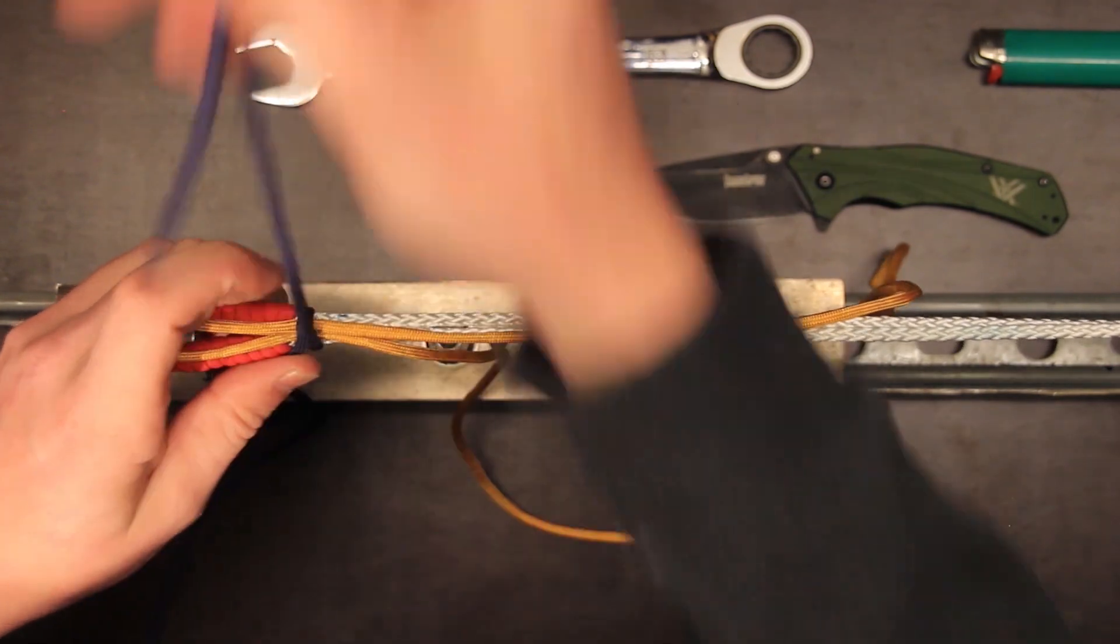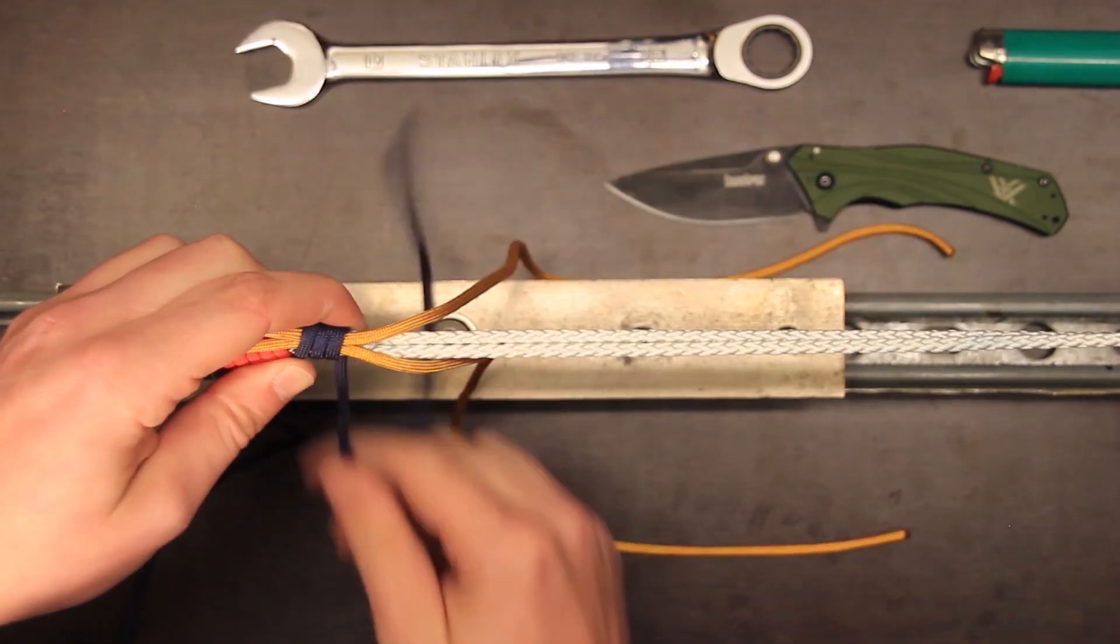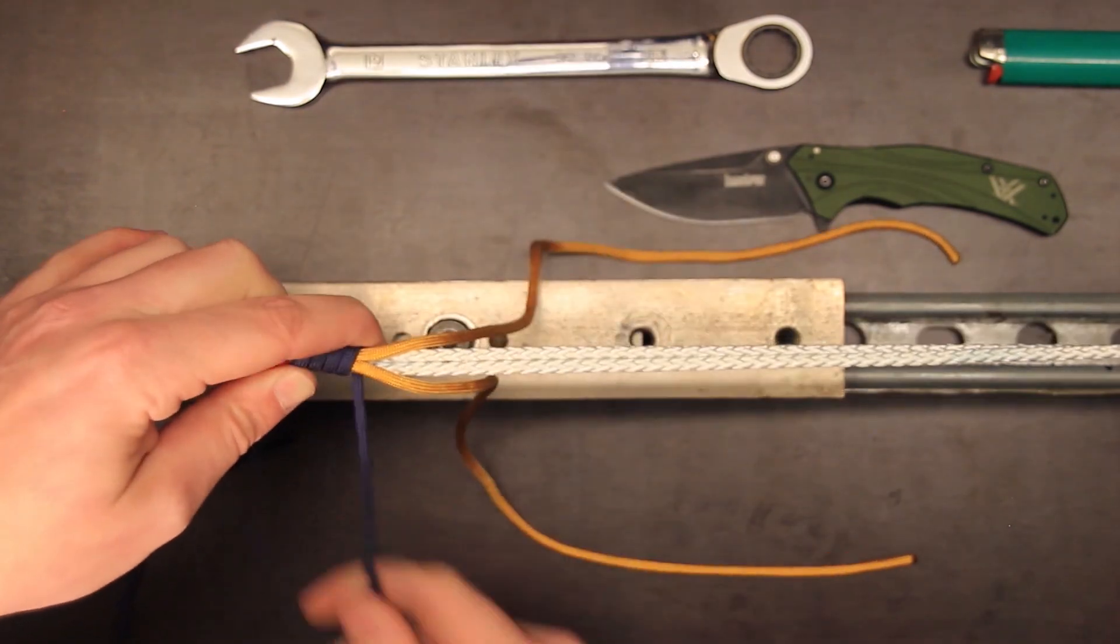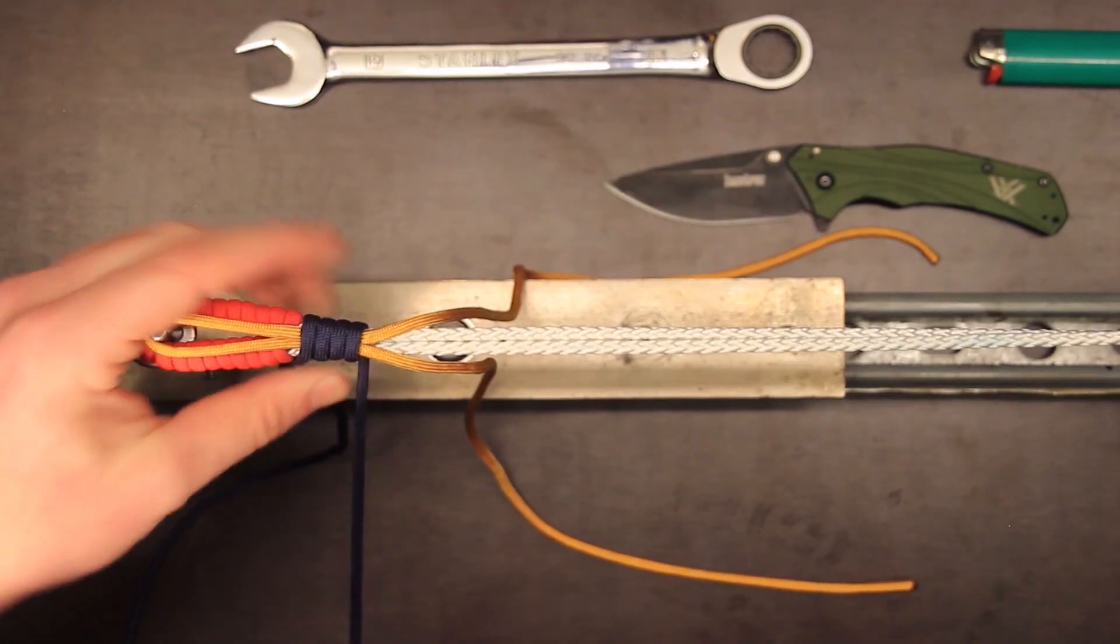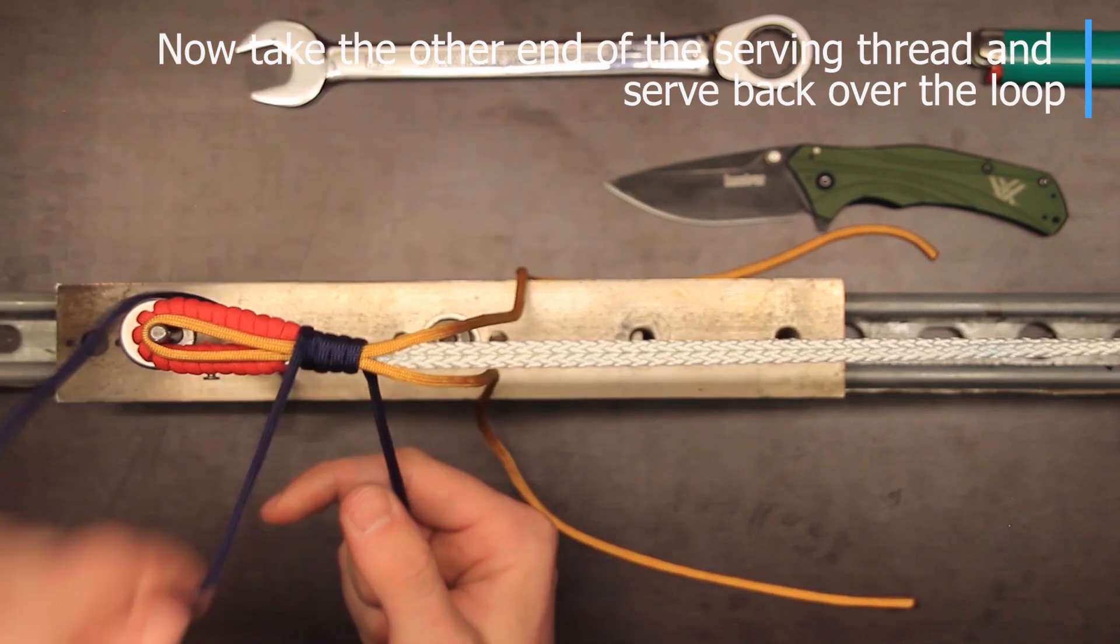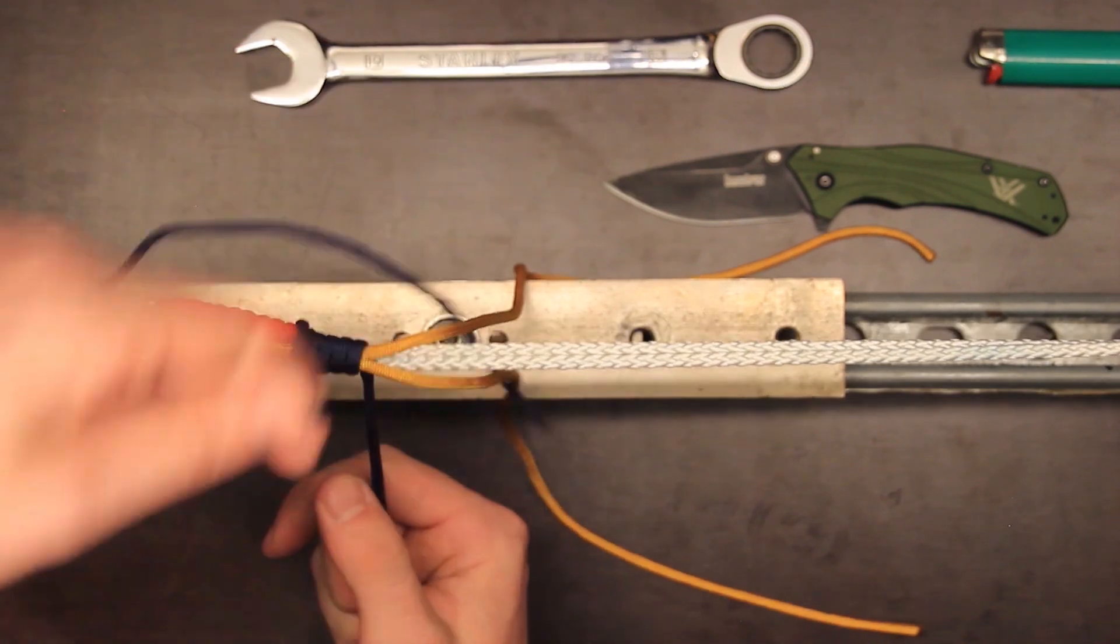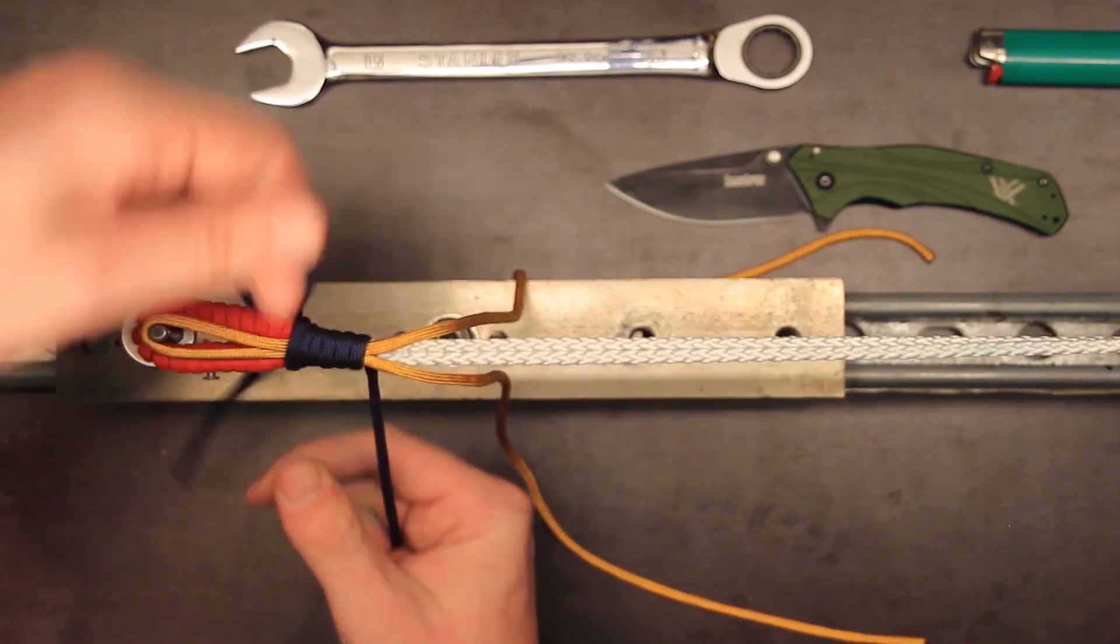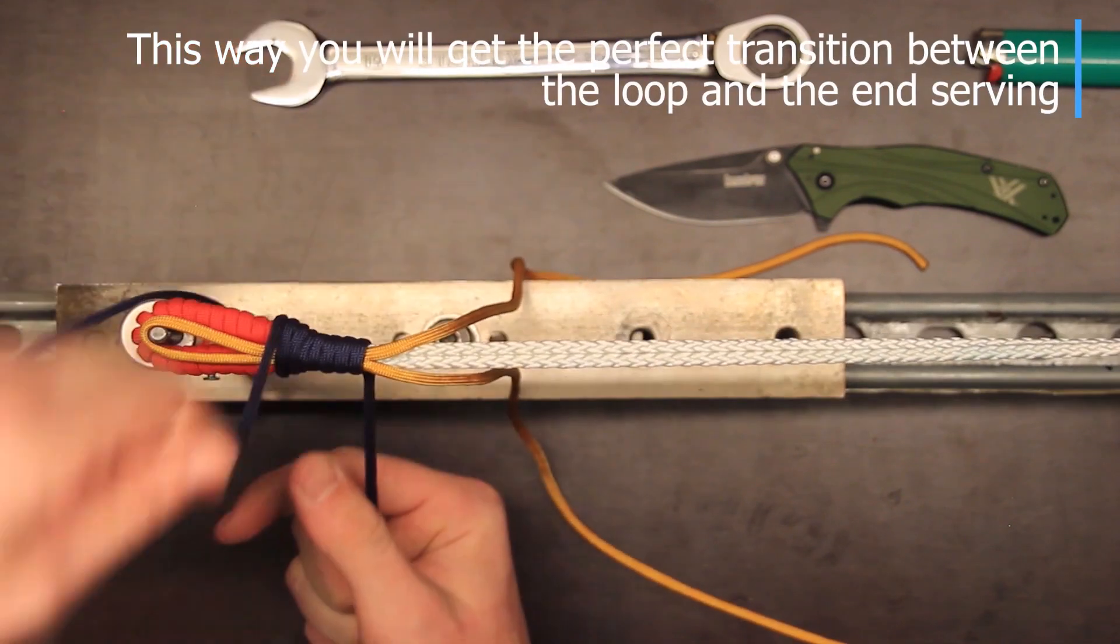The first you do is just start serving usually 20 or 30 turns so it will stay on the string and when you get done with that you pick the other piece of the serving thread and you wind it back till you get the desired size of loop.